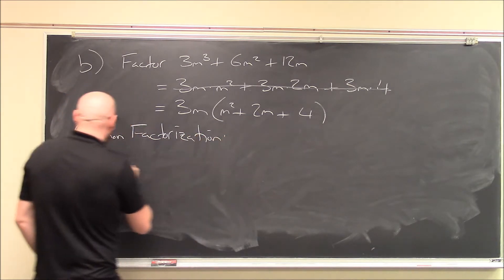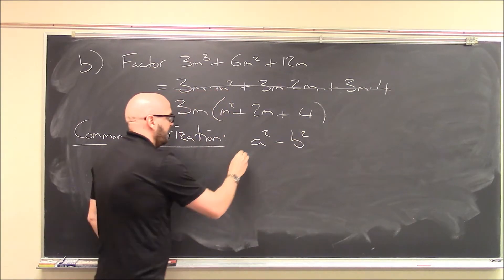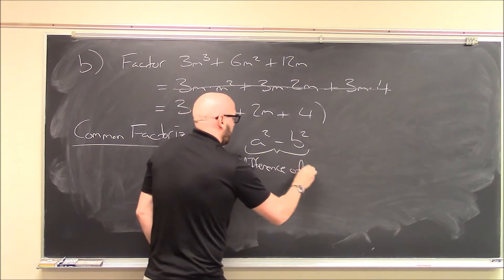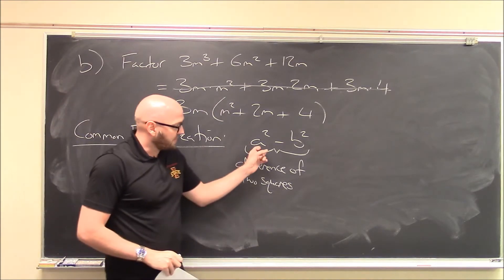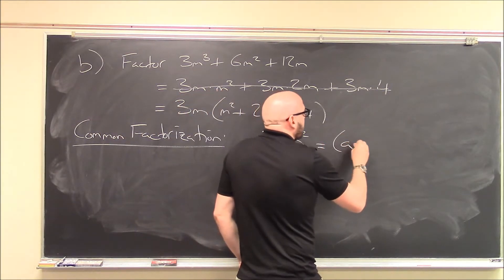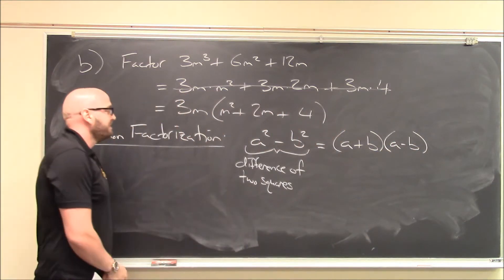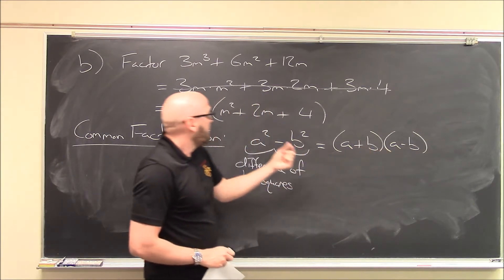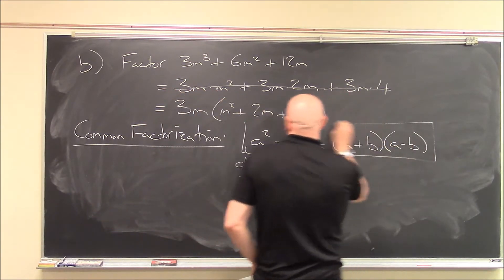A really common factorization: a squared minus b squared, usually known as a difference of two squares. I've got one squared term minus another squared term. This always factors, and it's worth committing to memory exactly how: it factors as (a plus b) times (a minus b). You can FOIL this out and verify that it does multiply to give a squared minus b squared. This is worth memorizing so you don't have to do it by hand again.